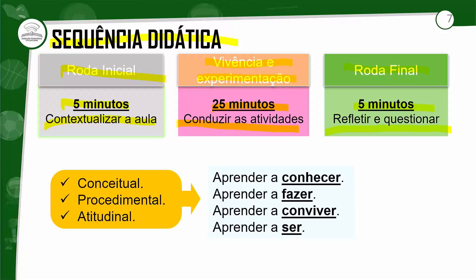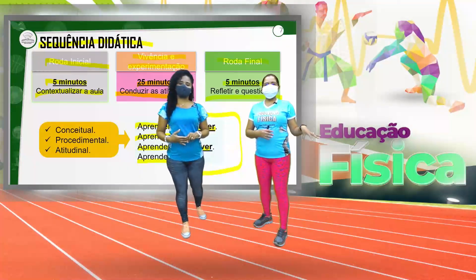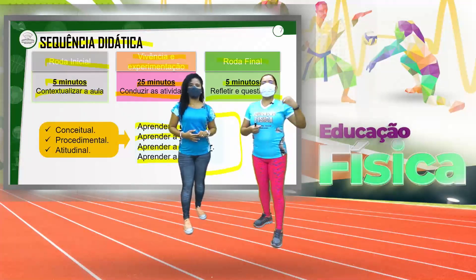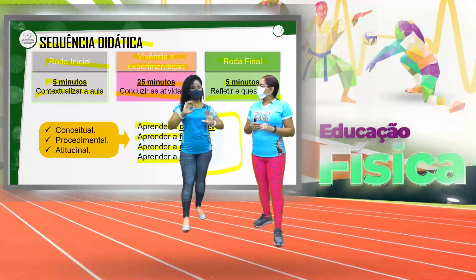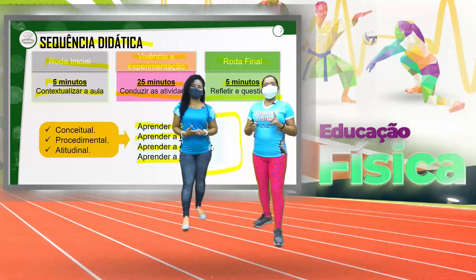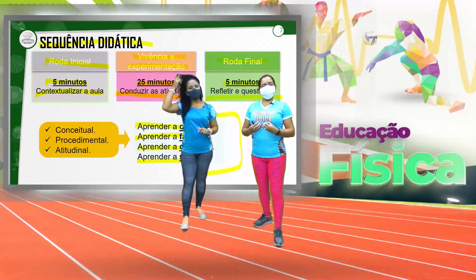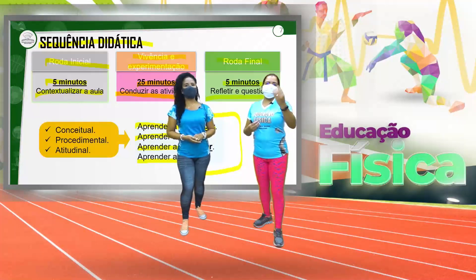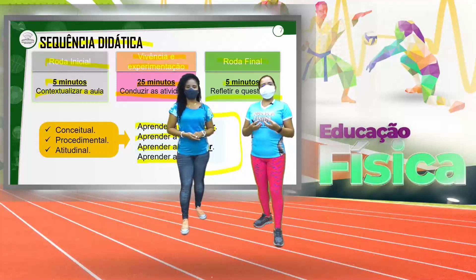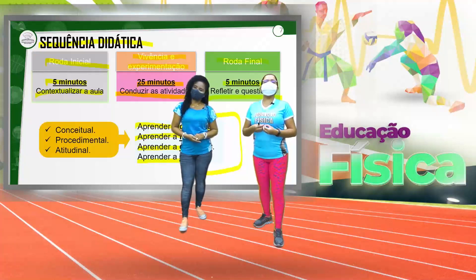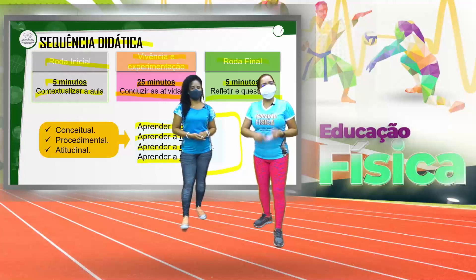Nós temos que considerar os quatro pilares da educação: o conhecer, o fazer, o conviver e o ser. Esse estudante vai ser protagonista e vai vivenciar todas essas etapas durante o processo de ensino-aprendizagem da educação física. Dentro dessa sequência didática, você vai ver que a gente vai estar sempre repetindo e enfatizando essa estrutura — ela permanece, vai mudar as atividades. Porque a gente trabalha numa estrutura pedagógica de sequência, que vai possibilitar para o aluno atingir esses quatro pilares. Você vai ter um momento de conversa e contextualização, um momento de vivência prática e um momento de reflexão — trabalhando o conceitual, o procedimental e o atitudinal.